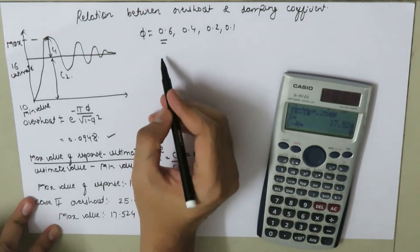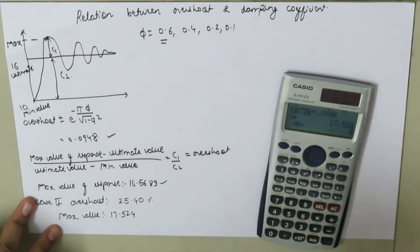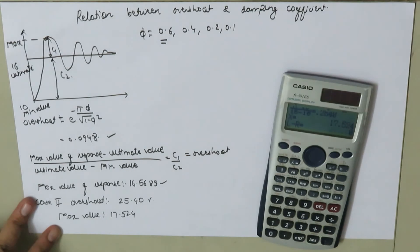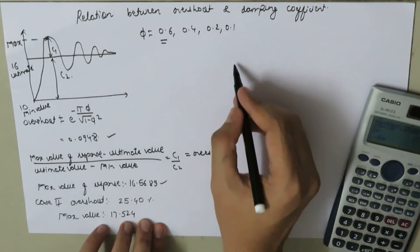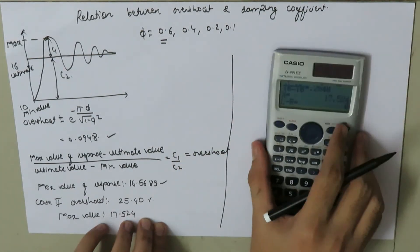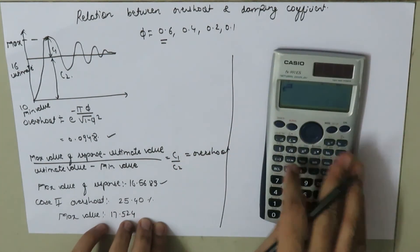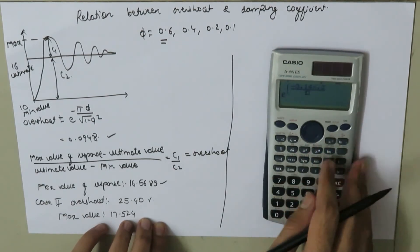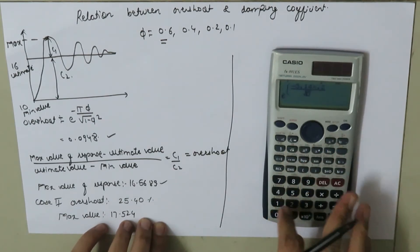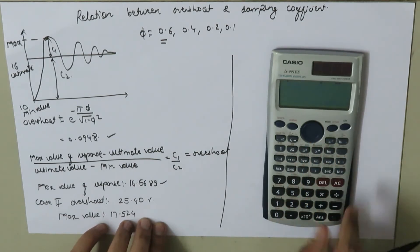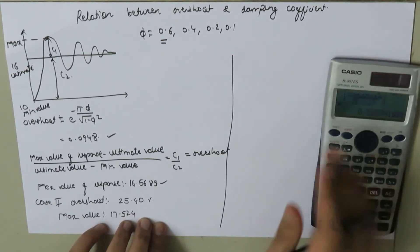From these two cases it is very clear that as the damping coefficient decreases, the overshoot increases and the maximum value also increases. Now let us check case 3 when the damping coefficient is 0.2: e to the power of negative pi times 0.2, divided by the square root of 1 minus 0.2 squared.